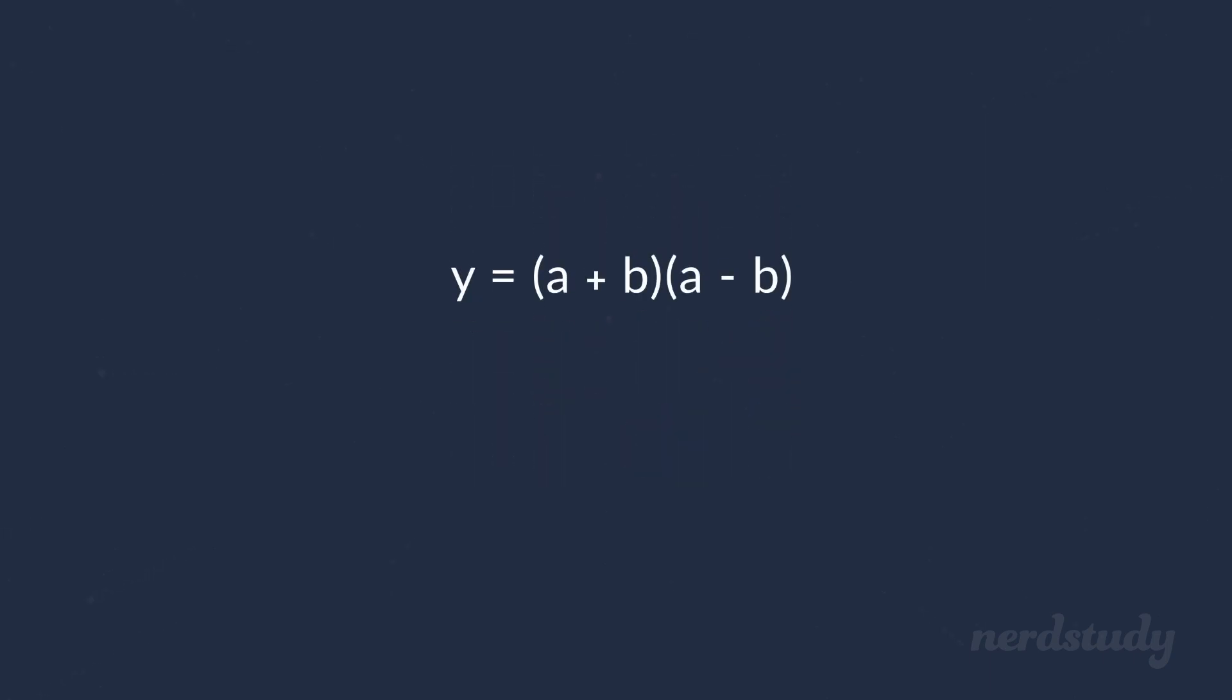It's as easy as that. Now, what's interesting about multiplying conjugates is that when you simplify them, you will end up with a squared minus b squared every single time.